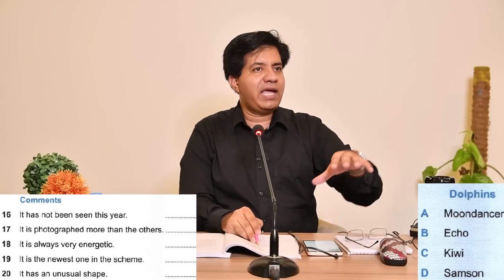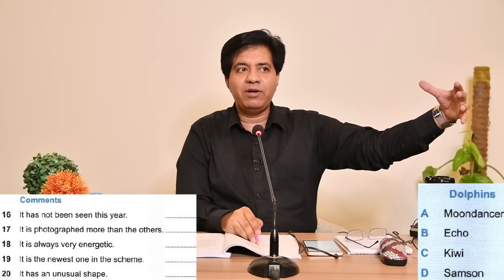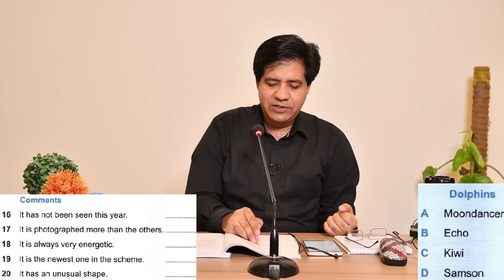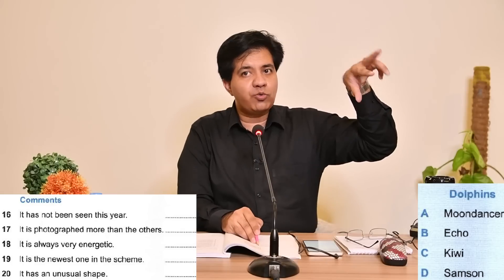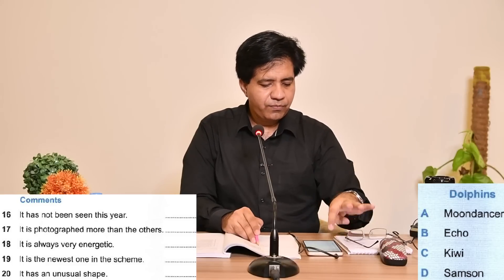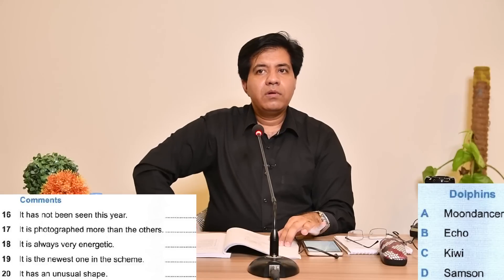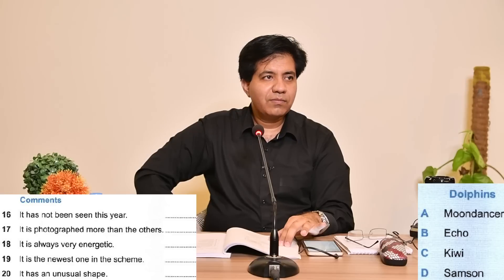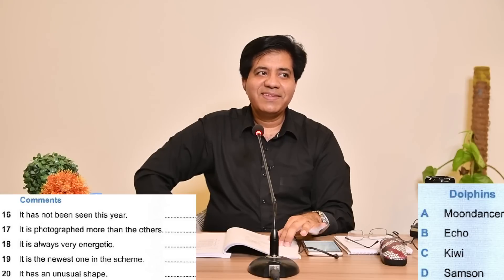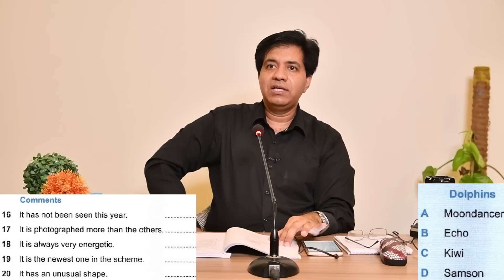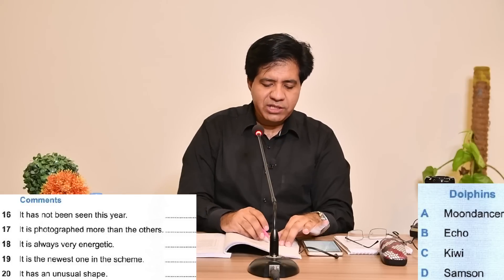Question number 17: photographed more than the others. They might say the dolphin likes to have her photograph taken, or she is photogenic, or anything like that. All the others have been out in force. Samson and Moon Dancer are often photographed together, but it's Kiwi who's our real character as she seems to love coming up close for the cameras and we've captured her on film hundreds of times. So the answer is C.